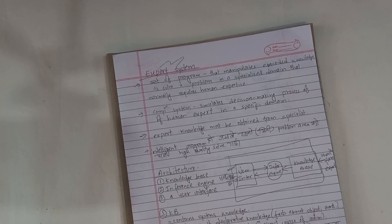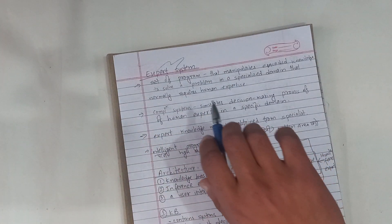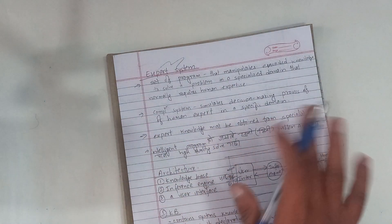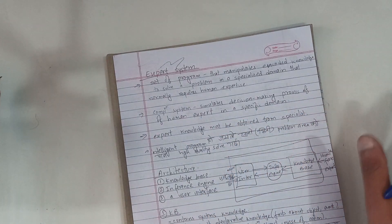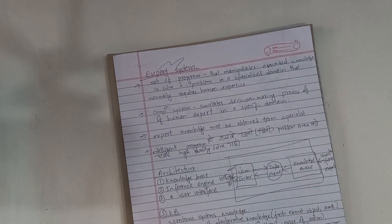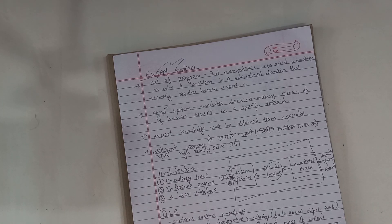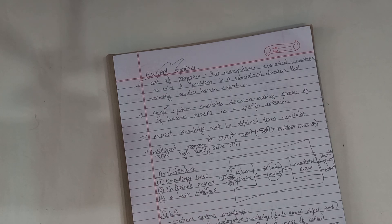Welcome back. What is the expert system? It is a set of programs that manipulates encoded knowledge to solve a problem in a specialized domain that normally requires human expertise. We have encoded knowledge and human expertise to solve that domain problem.